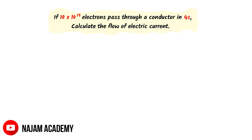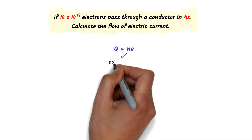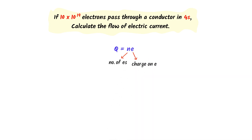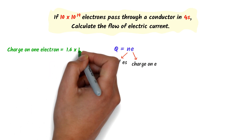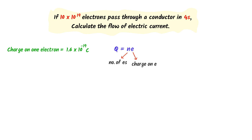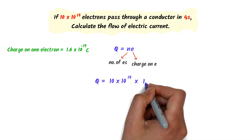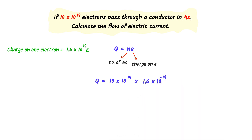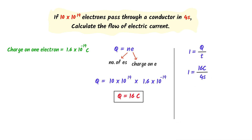Finally, let me teach you a numerical question. If 10 × 10¹⁹ electrons pass through a conductor in four seconds, calculate the flow of electric current. We know that Q is equal to N into E, where N is the number of electrons and E is the charge on one electron. The charge on one electron is 1.6 × 10⁻¹⁹ coulombs. So Q equals 10 × 10¹⁹ multiplied by 1.6 × 10⁻¹⁹, which gives Q equal to 16 coulombs. Using the formula I equals Q upon T, with 16 coulombs and time of 4 seconds, I get 4 coulombs per second, or 4 amperes.